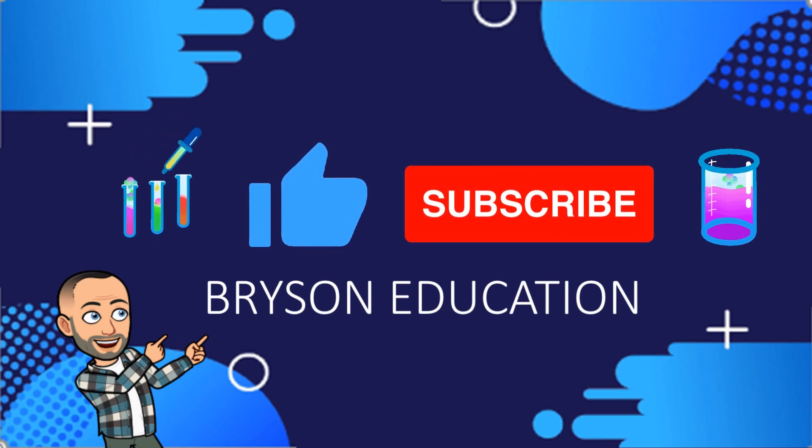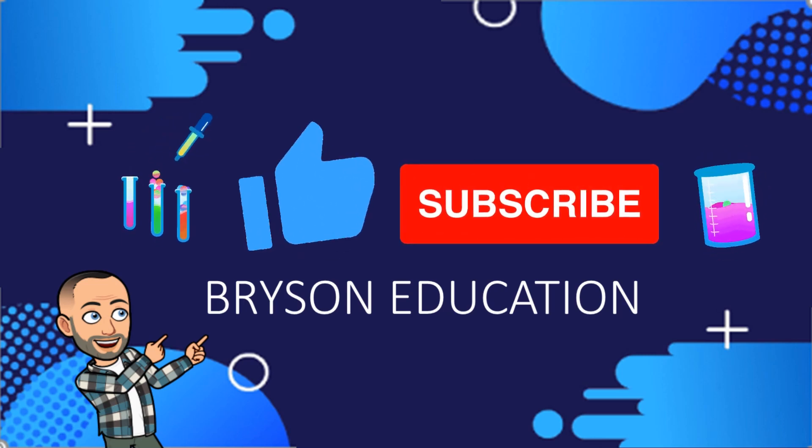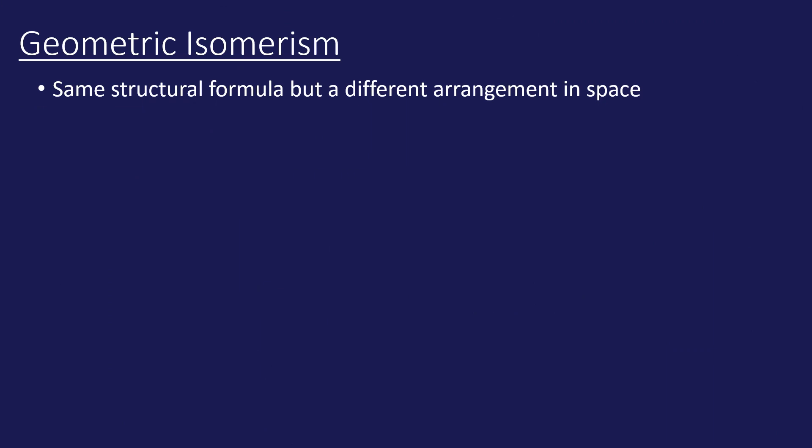Now, geometric isomerism is when we have the same structural formula but a different arrangement in space. The simplest example I can give is something like this.